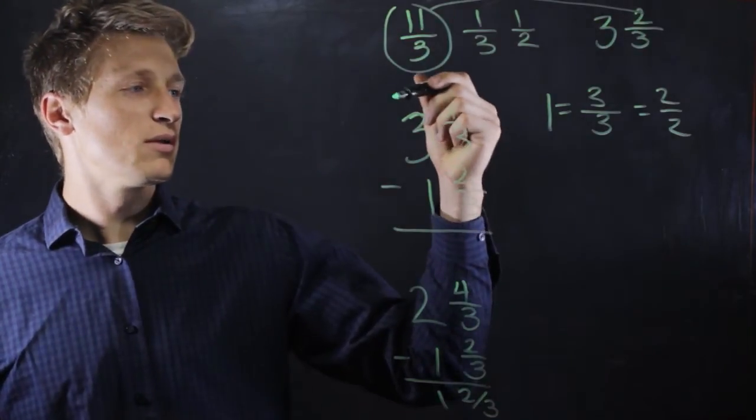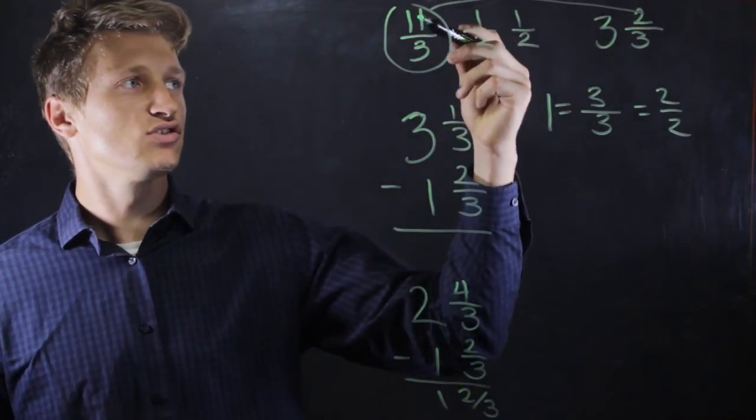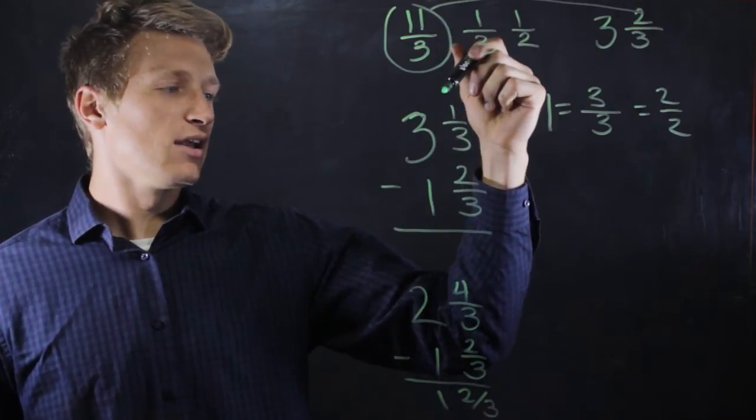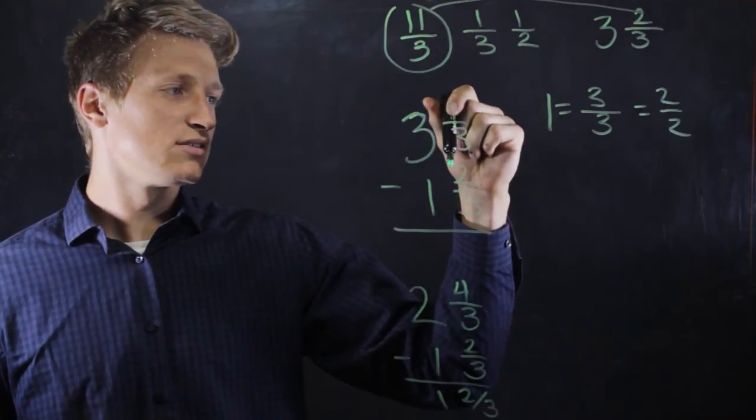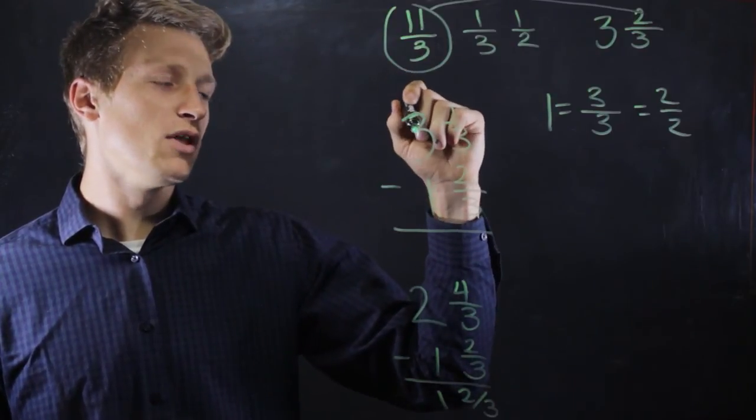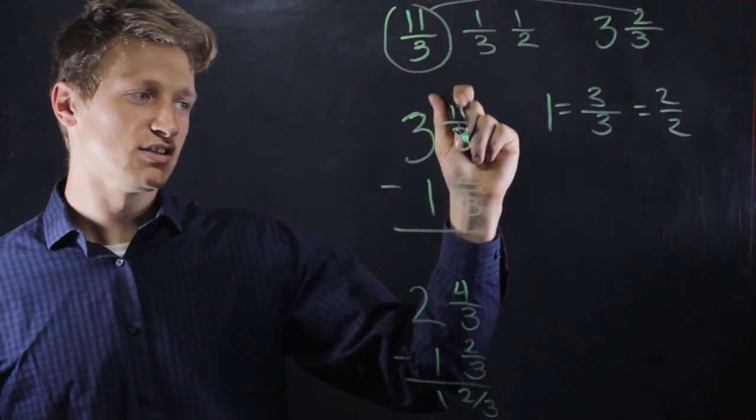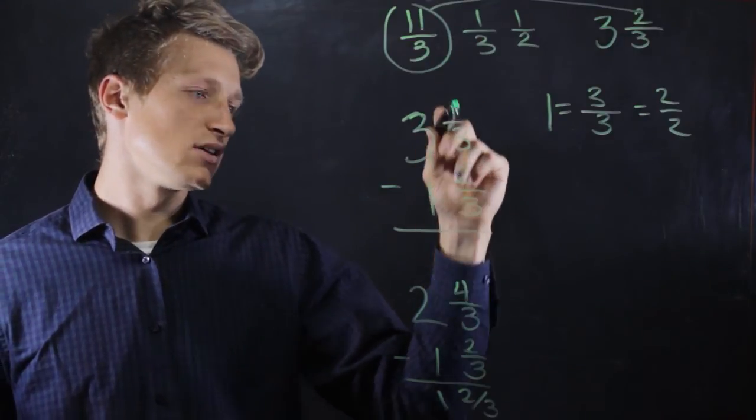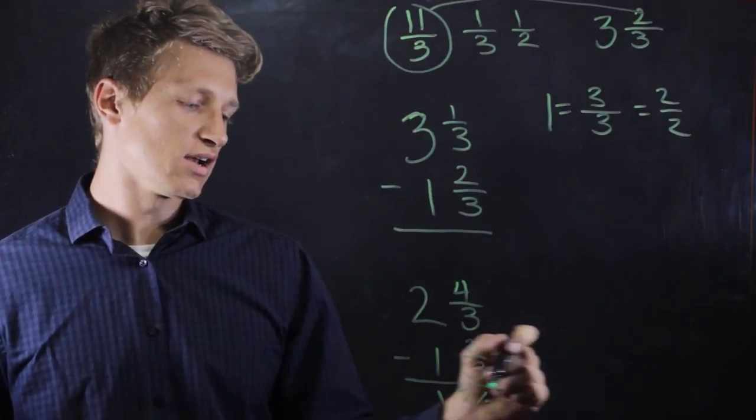To borrow from an improper fraction, we change it to a mixed number and subtract, or we borrow from the whole number part and then add it to the fraction, and then we can easily subtract the fractions afterwards and get our solution.